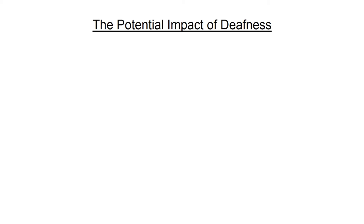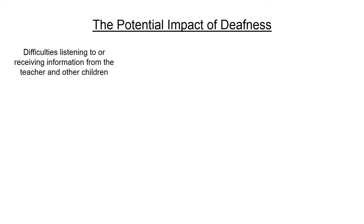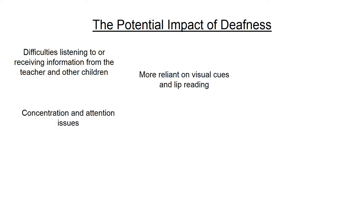There are a number of potential impacts of deafness. The most obvious point is that listening to or receiving information is going to be more difficult. If a child or young person is new to wearing their hearing technology, they may also be behind in their listening development. When one of our senses is impaired, it means that we become more reliant on our other senses. For those with a hearing loss, the use of visuals is very important, including seeing someone's face for lip reading and expressions. The increased effort it takes for listening or watching a signer means that deaf students can get tired more easily than other students with normal hearing, and this can affect their concentration and attention.